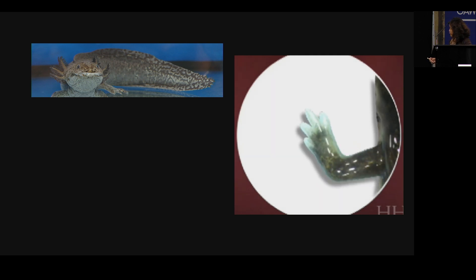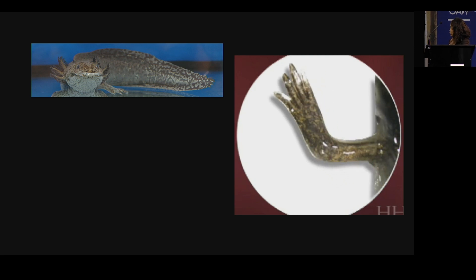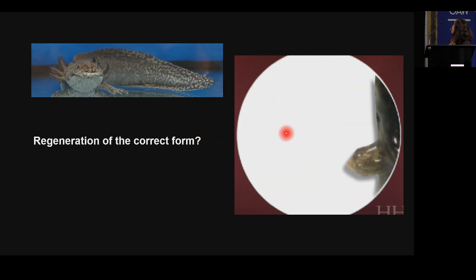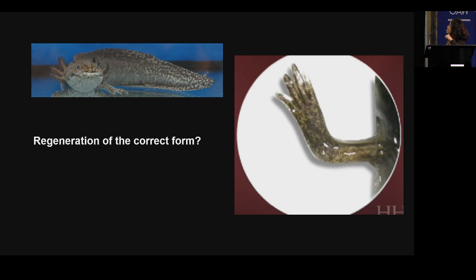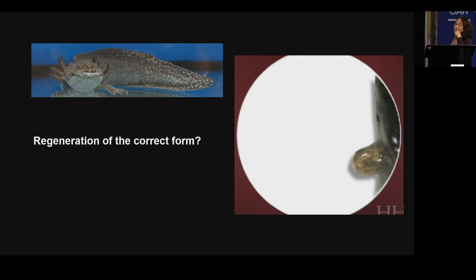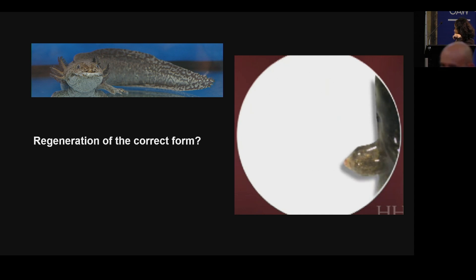We've been studying how this animal uses stem cells to regrow the limb — and not only regrow the limb, but to regrow the correct form. When you amputate at the upper arm, you regenerate the elbow and the hand, and also the right number of digits. Can we learn the principles of regeneration from such an animal and apply those principles to perhaps engineering biological limbs for regeneration in humans?